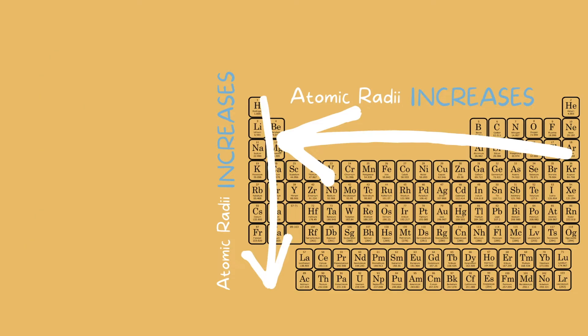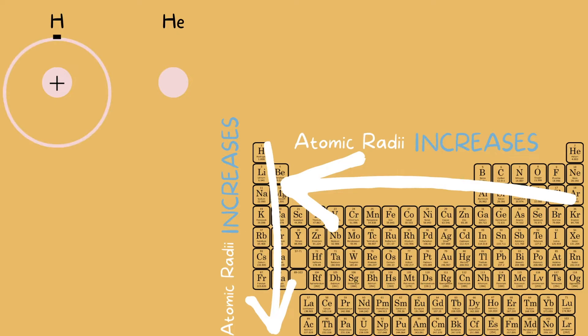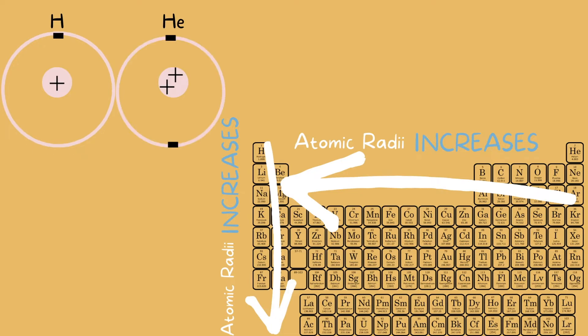Now let's compare the atoms right to left and see why they get bigger towards the left side. Take hydrogen and helium, for example. Hydrogen has one proton in the nucleus and one electron around it. Helium has two protons in the center and two electrons around it.